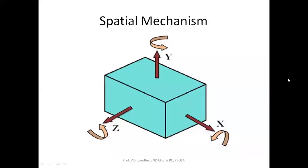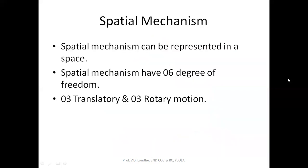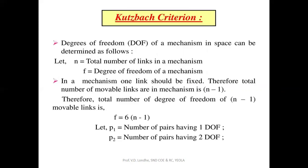For spatial mechanisms, which exist in three-dimensional space, there are six degrees of freedom — three translatory and three rotary. For planar mechanisms we use Grubler's criteria, and for spatial mechanisms we use the Kuzbash criteria. The Kuzbash formula uses 6(n − 1) since there are six degrees of freedom, with one link fixed. However, since we mostly deal with planar mechanisms, Grubler's criteria is more commonly used.